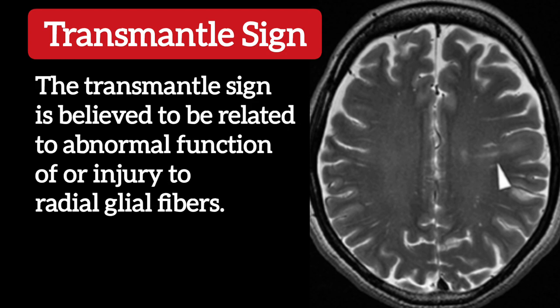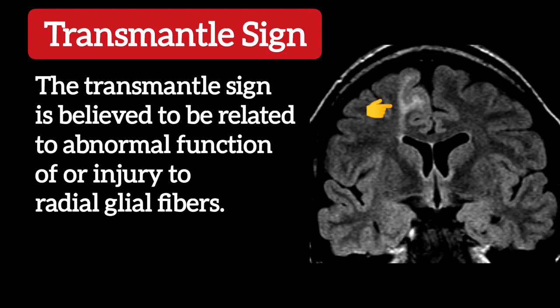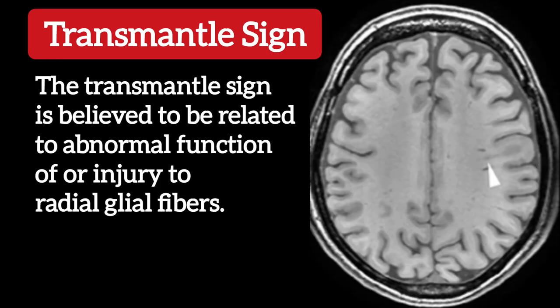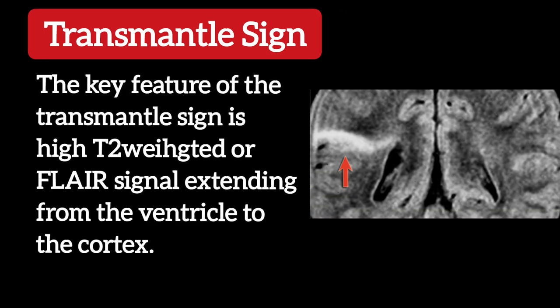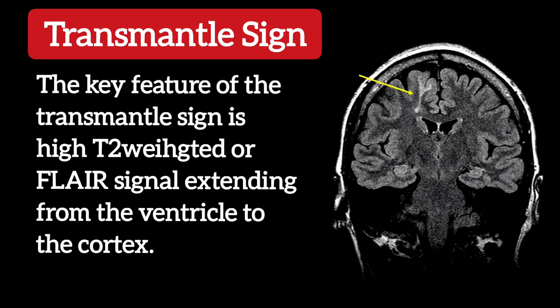The transmantle sign is believed to be related to abnormal function of, or injury to, radial glial fibers. On MRI brain, the key radiographic feature is high T2-weighted or FLAIR signal extending from the ventricle to the cortex.